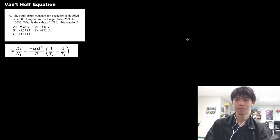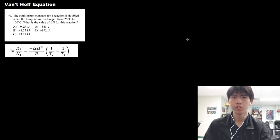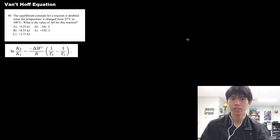Okay, let's begin by reading the problem. The equilibrium constant for a reaction is doubled when the temperature is changed from 25 degrees Celsius to 100 degrees Celsius. What is the value of delta H, or enthalpy, for this reaction?